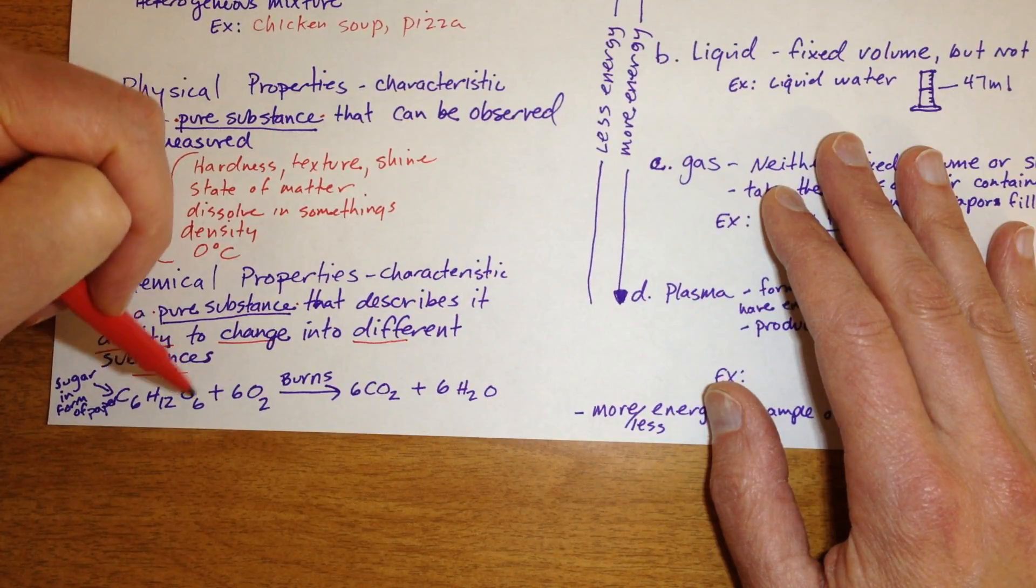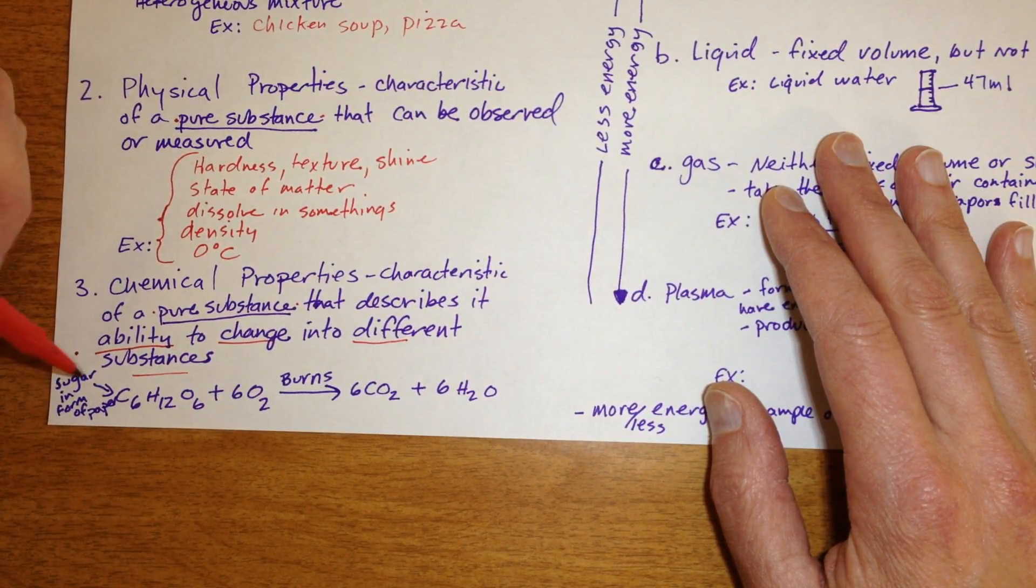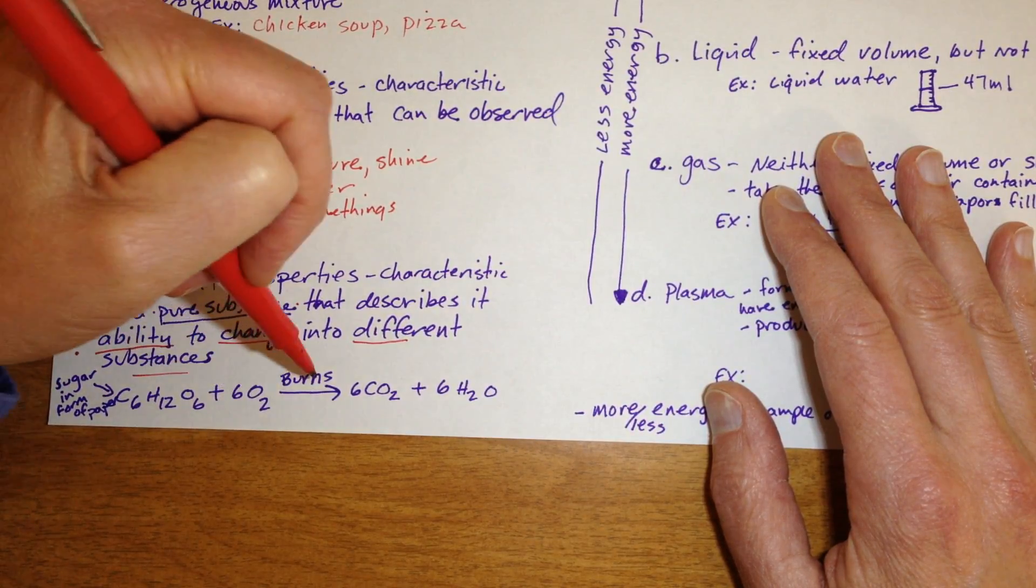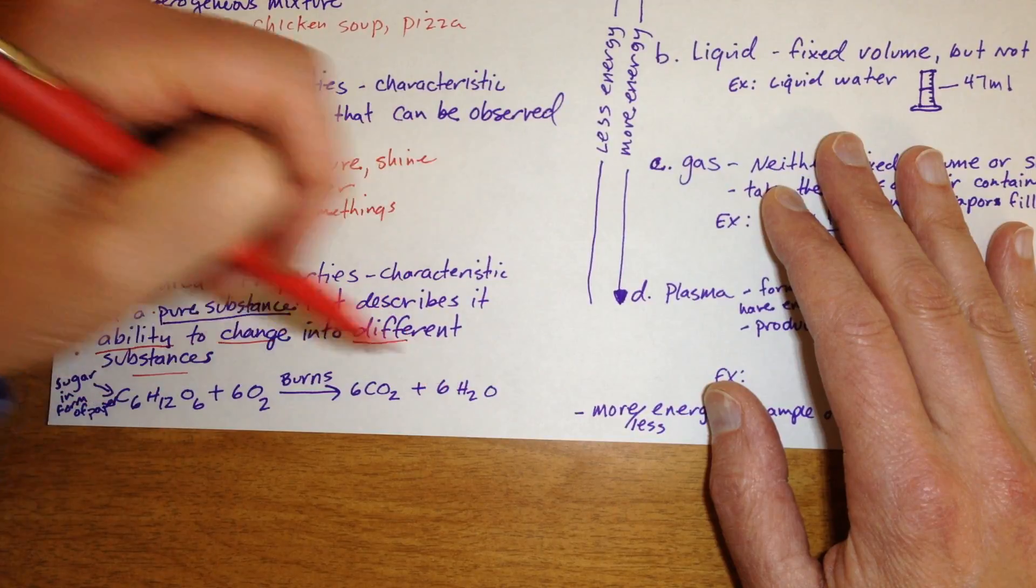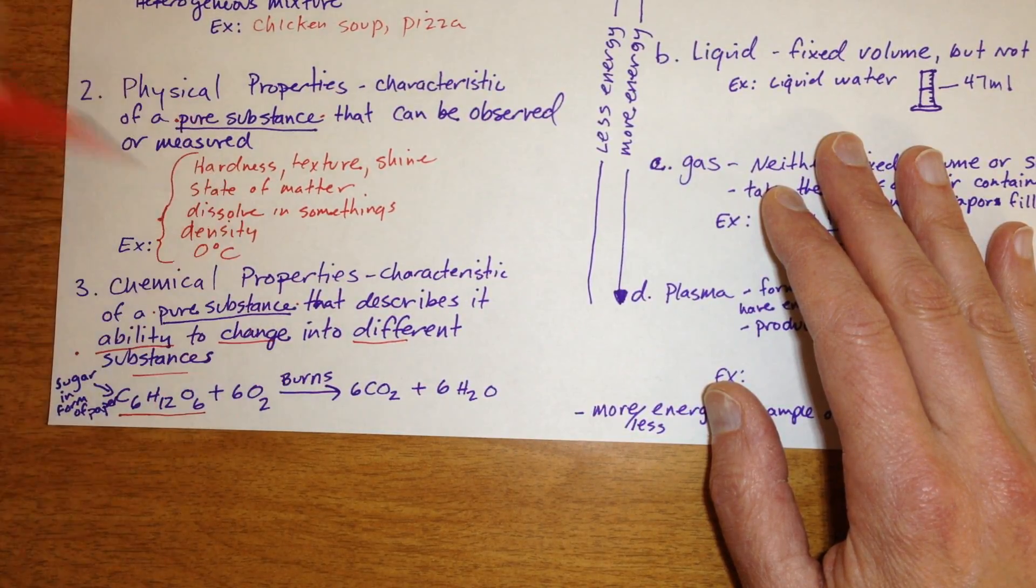For example, drawn down here, we have, this is sugar, or even the paper that I'm writing on is made out of a form of sugar called cellulose, can combine with oxygen and burn to make carbon dioxide and water. So a chemical property of this paper and sugar is that it can release energy.